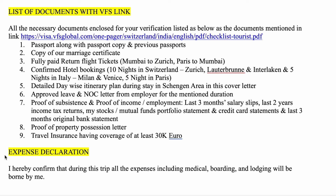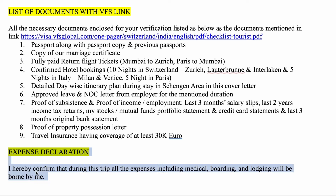After that, the seventh section is the Expense Declaration, in which you have to take responsibility for your family's expenses. You give a self-declaration that you will cover medical, boarding, lodging, and all other responsibilities for your family members.